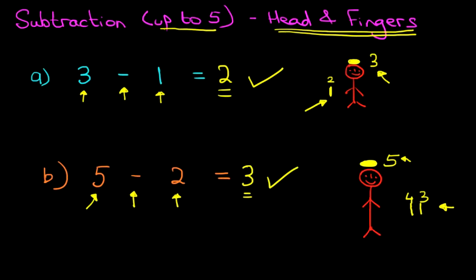5 minus 2 equals 3. So that is subtraction of numbers up to 5 using the head and fingers method. So this is the next step when you are adding and subtracting. Once you can do this, we will then move on to subtracting without using your head and fingers, without using the dot method or the number line. It'll simply be just purely with mental arithmetic. That comes at a later stage.